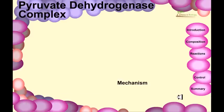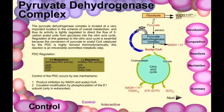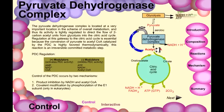The pyruvate dehydrogenase complex is located at a very important location in overall metabolism and is tightly regulated to direct the flow of two-carbon acetyl units from glycolysis into the citric acid cycle. Regulation at the gateway of the citric acid cycle is essential because the conversion of pyruvate to acetyl-CoA catalyzed by the PDC is highly favored thermodynamically. This reaction is an irreversible committed metabolic step — glycolysis through pyruvate, then conversion of pyruvate to acetyl-CoA is thermodynamically favored. Once you produce acetyl-CoA, you must go through the citric acid cycle; there is no going back.